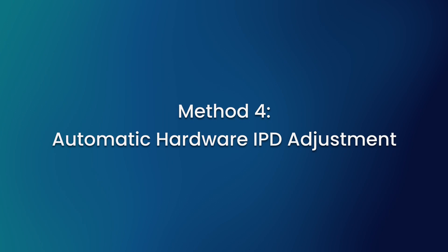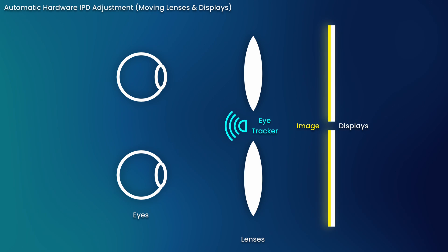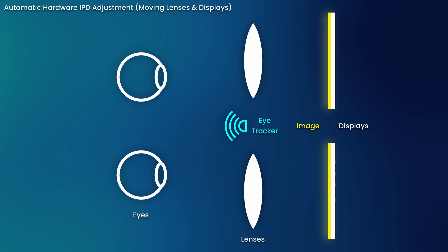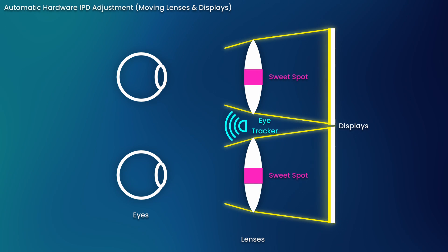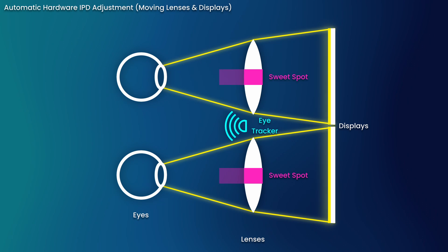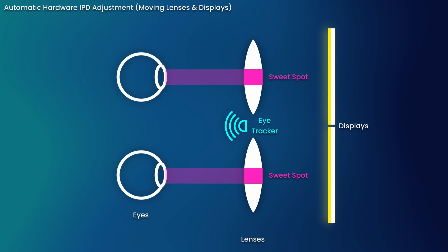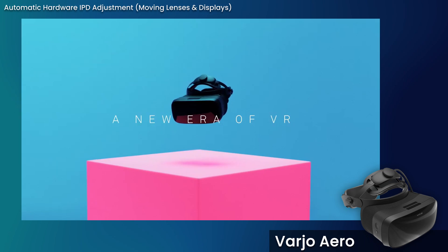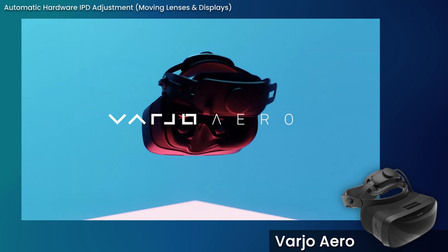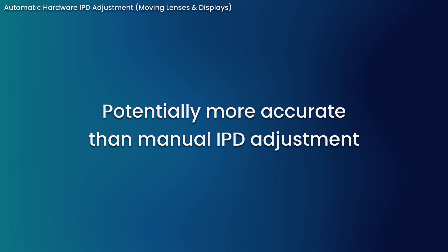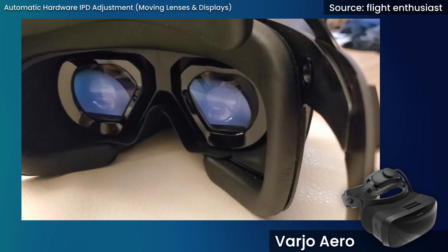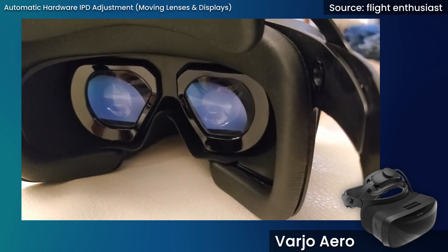Finally, automatic hardware IPD adjustment: this method combines mechanical adjustment of the lenses and displays with eye tracking data, allowing the headset to adjust for your IPD fully automatically. This is the most effective IPD adjustment system and is only found on very high-end devices like the Vario Aero. Using eye tracking data allows the headset to be much more accurate with its lens placement, potentially down to sub-millimeter levels — not only super accurate and convenient, it also looks extremely cool.